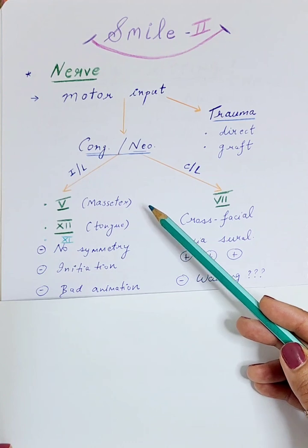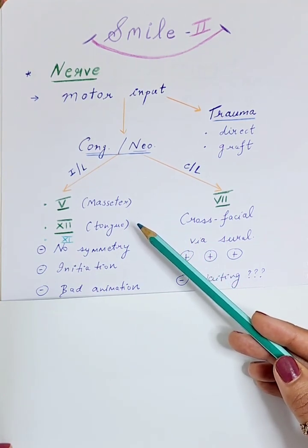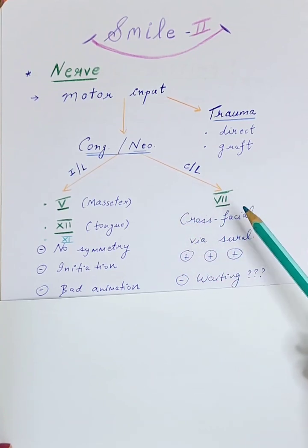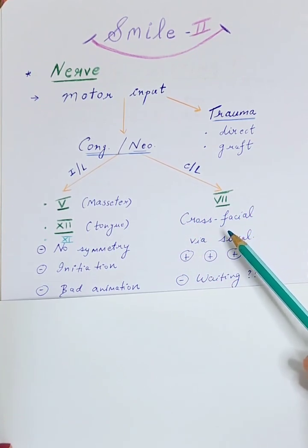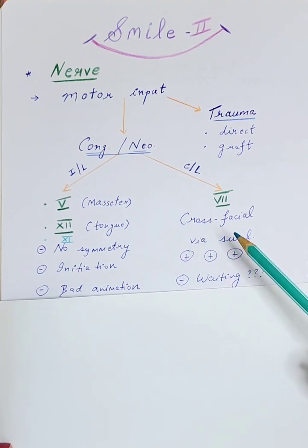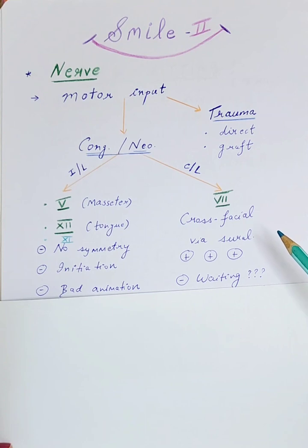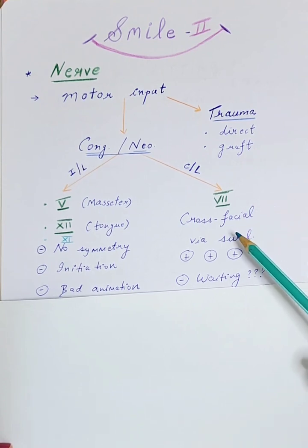In cases where we do not have other options, the nerve to the masseter provides a very powerful motor input, and we will discuss how that procedure is done in later videos. When we talk about an ideal procedure for smile reanimation, we have to remember our principle of 'like with like' — we want to provide a similar sort of motor input for our facial muscles, and which better nerve than the facial nerve itself.